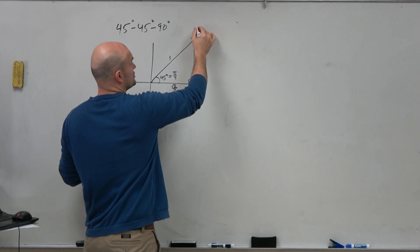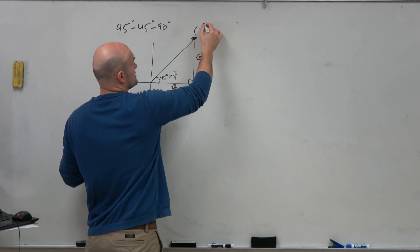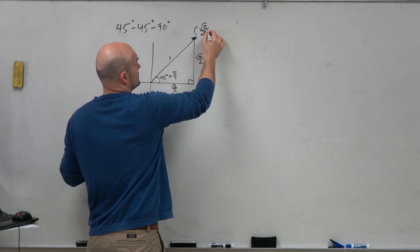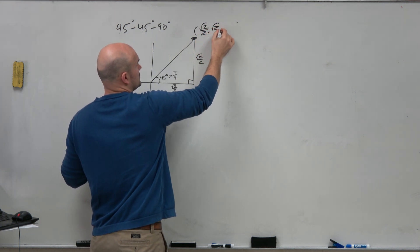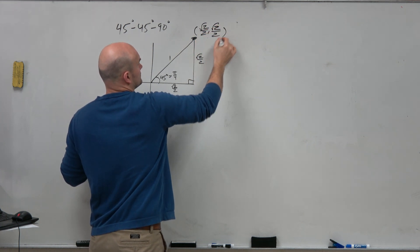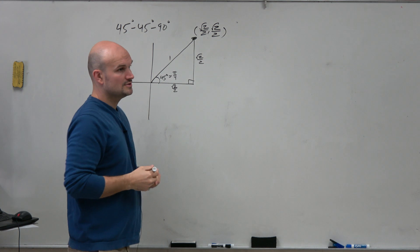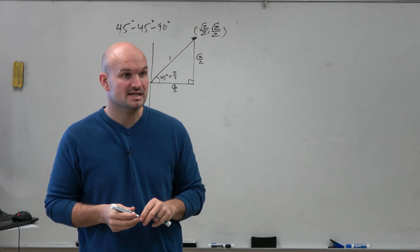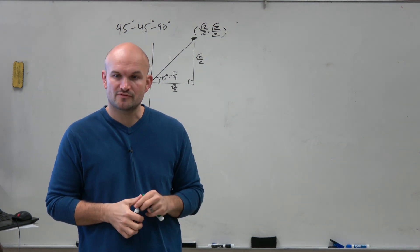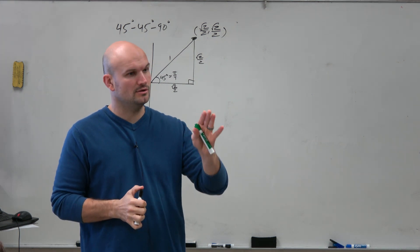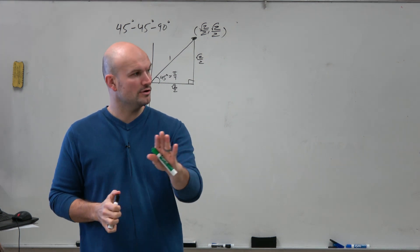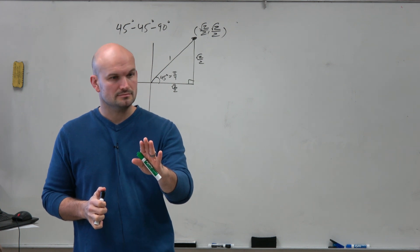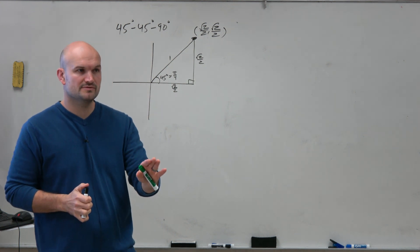We can actually determine this coordinate point: square root of 2 over 2, comma, square root of 2 over 2. That is the coordinate point in the first quadrant for that middle angle — square root of 2 over 2, comma, square root of 2 over 2.